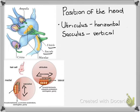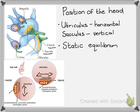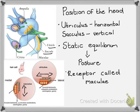We call this ability to sense the position of the head static equilibrium. Static equilibrium is closely linked to the posture of the body. In order to sense this posture, we need a receptor structure. The receptor used to receive stimulus about the posture of the body is called the macula, and there is a macula in both the utricle and the saccule.